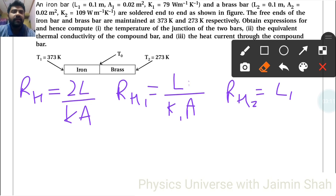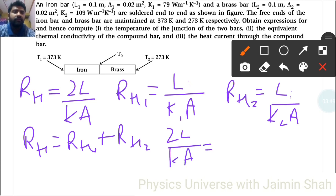So L1 upon K2 A. Now these rods are in series, so that's why I can write RH1 plus RH2. So 2L upon K A is equal to L upon K1 A plus L upon K2 A. Now L upon A common, so these are canceled out.